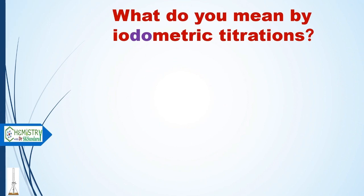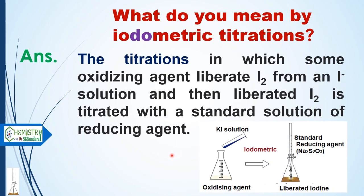What do you mean by iodometric titrations? In iodometric titrations, you take potassium iodide and add it to an oxidizing agent. The oxidizing agent oxidizes potassium iodide to liberate iodine. This liberated iodine is then treated with a standard reducing agent, like sodium thiosulfate, to find the strength of the oxidizing agent. It is a two-step reaction: first, KI reacts with the oxidizing agent to liberate iodine; second, the liberated iodine is titrated with standard sodium thiosulfate solution.